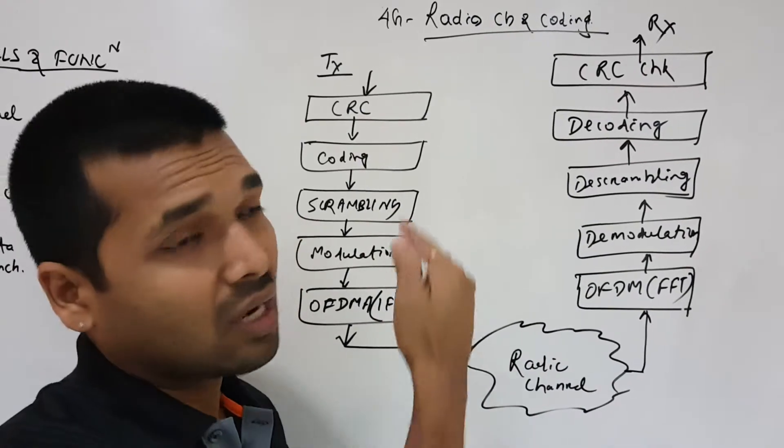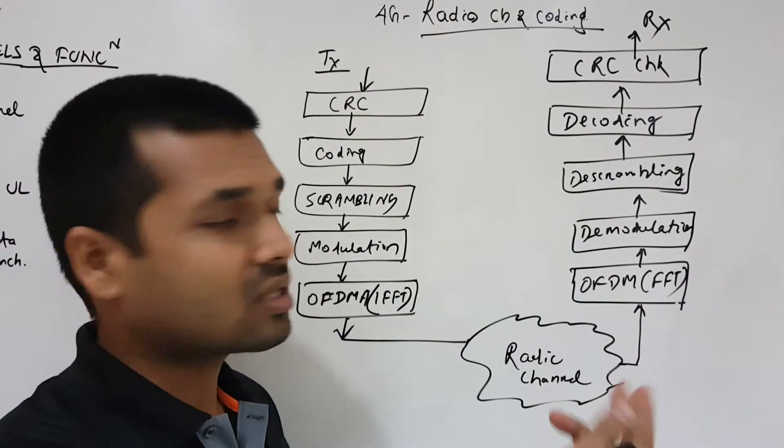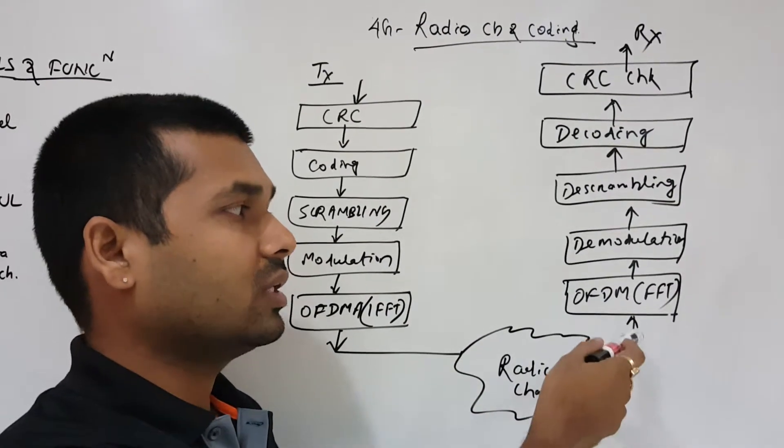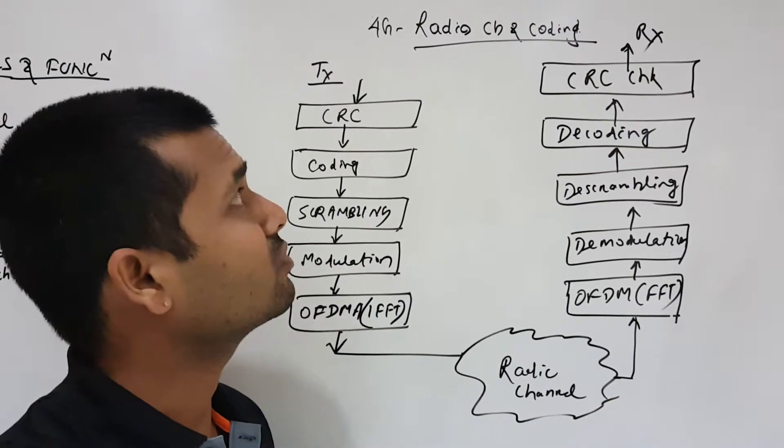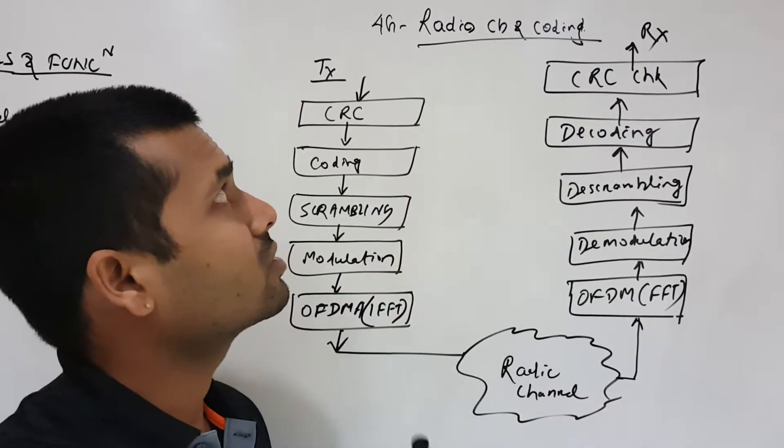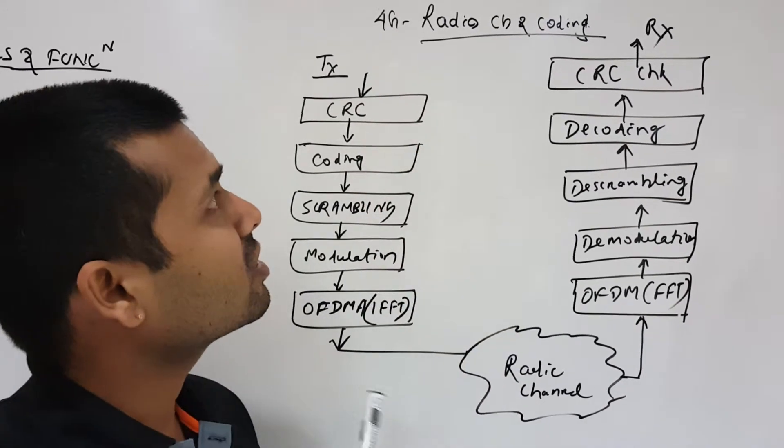We'll have a detailed discussion on how it happens from the eNodeB and how it is transmitted to the radio channels, and how it is received and other functions. So this is just a basic idea of how the radio works in 4G. The topics are radio channel and coding.